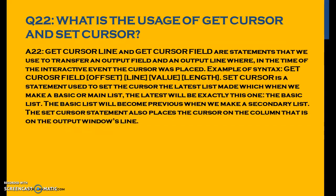What is the usage of GET CURSOR and SET CURSOR? GET CURSOR LINE and GET CURSOR FIELD are statements used to transfer an output field and an output line where the cursor was placed during the interactive event. Example syntax: GET CURSOR FIELD <field> OFFSET <offset> LINE <line> VALUE <value> LENGTH <length>. SET CURSOR is used to set the cursor on the latest list made — when making a basic or main list it will be exactly that list, and when we make a secondary list the basic list becomes previous. SET CURSOR also places the cursor on the column of the output window's line.